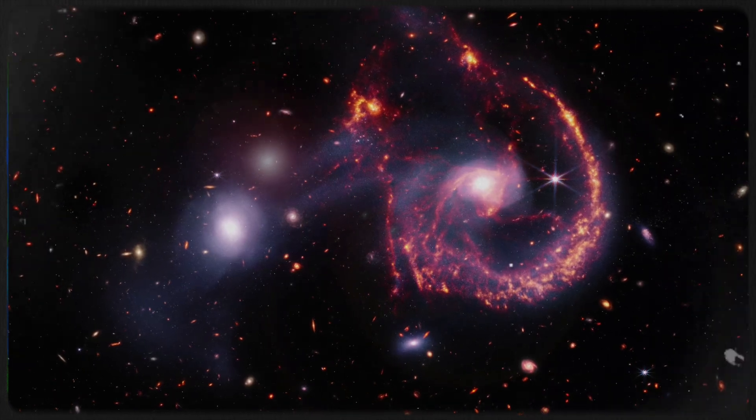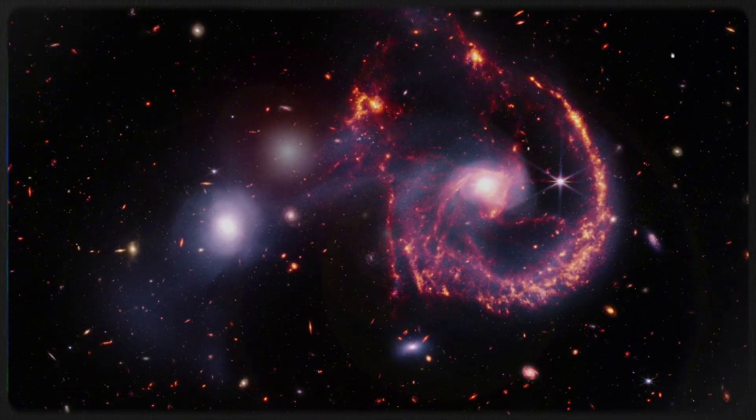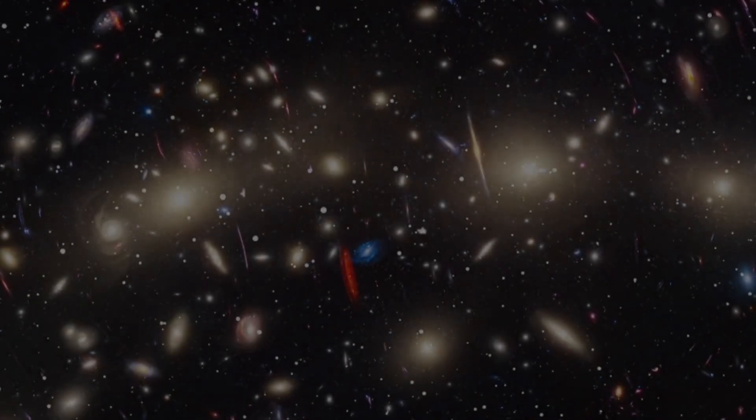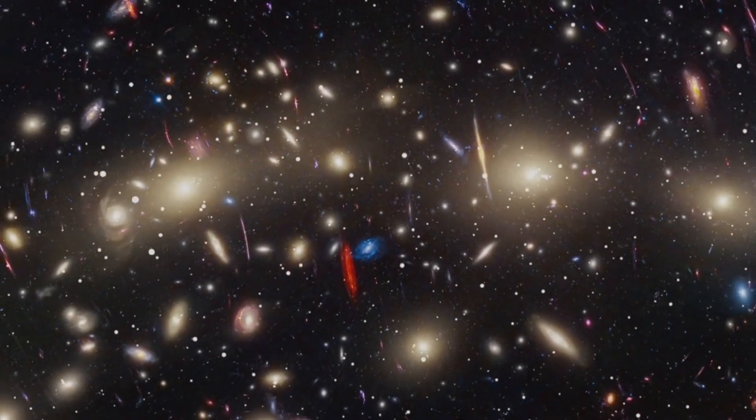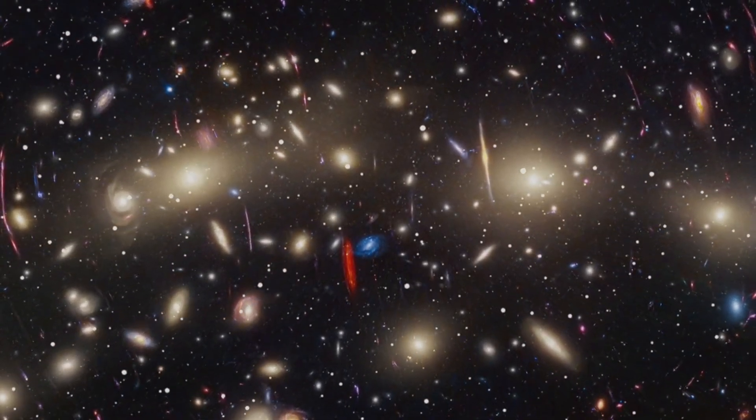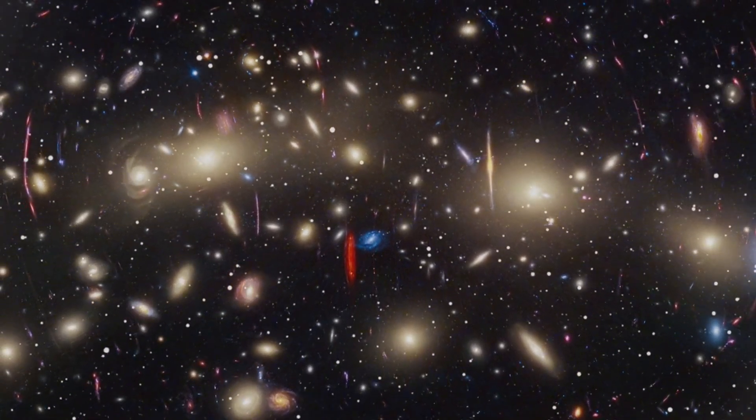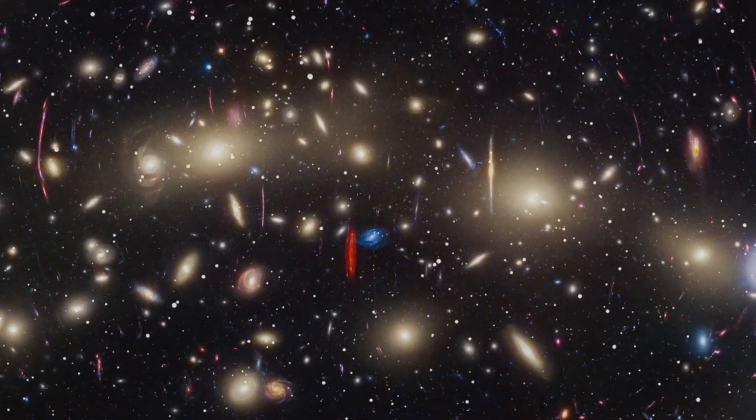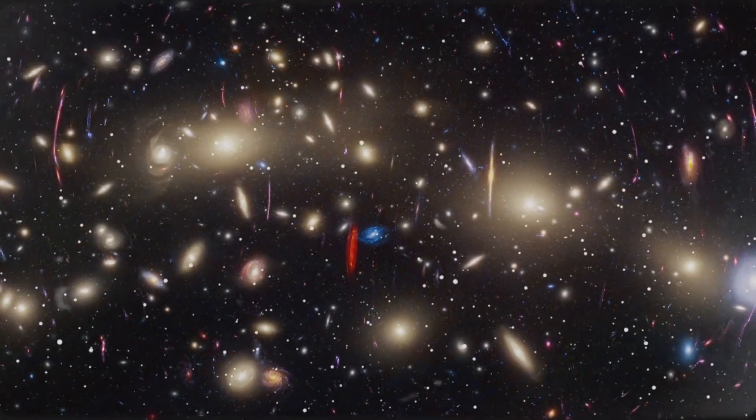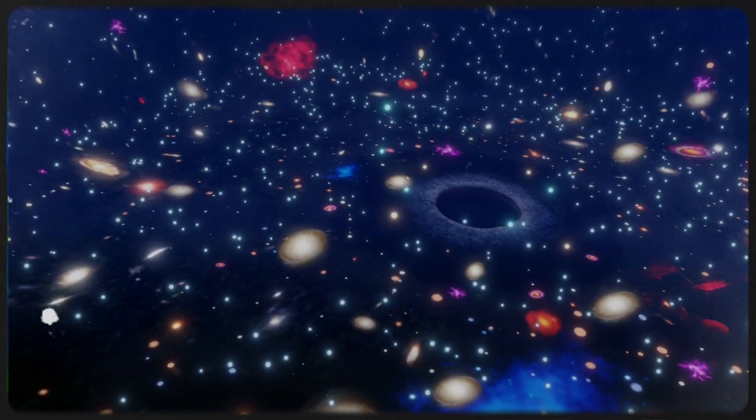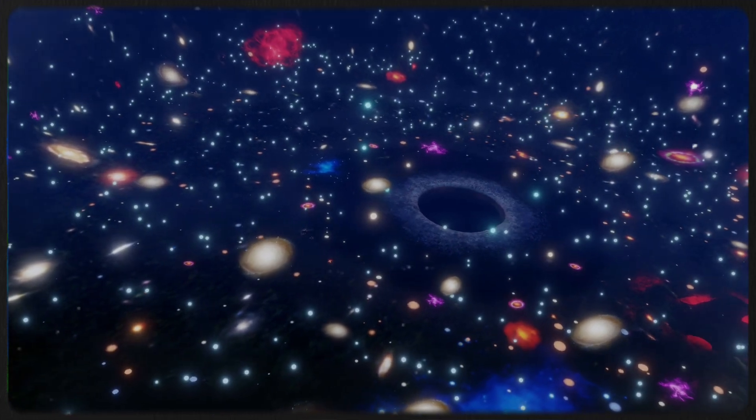If that's true, it could completely reshape how we understand the formation and evolution of the universe. To investigate this theory, Shamir and his team analyzed the redshifts of over 30,000 galaxies, essentially looking back through time. What they found was incredible. The farther back they looked, the stronger the spin alignment became. This suggests that in the early universe, galaxies were even more consistently rotating in the same direction.